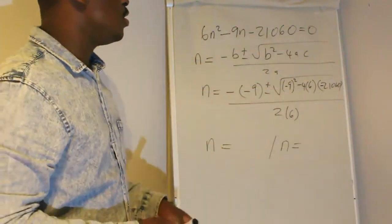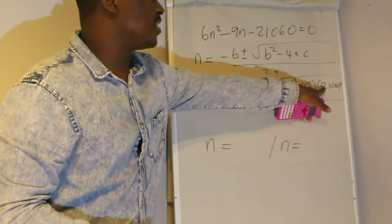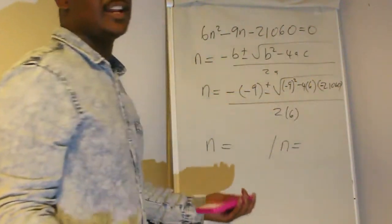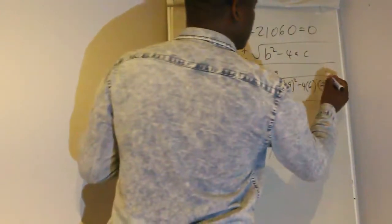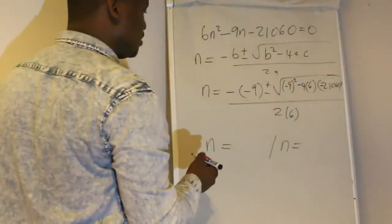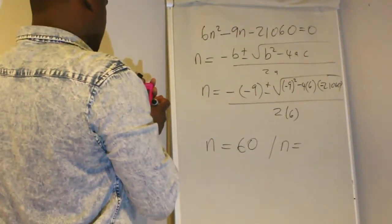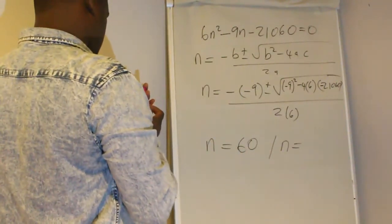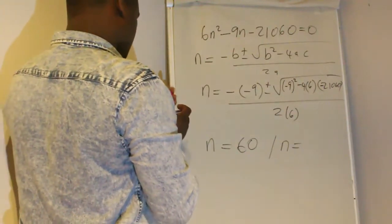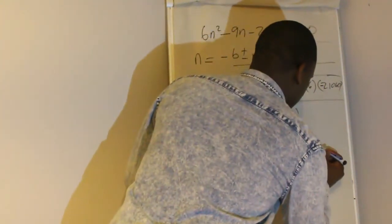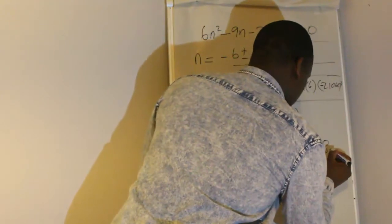So negative 9 plus square root, negative 9 squared, minus 4 into 6 times negative 21,060 all over 2 times 6. So your n is 60, then your second n value is negative 58.5.